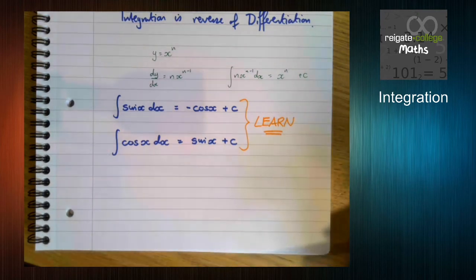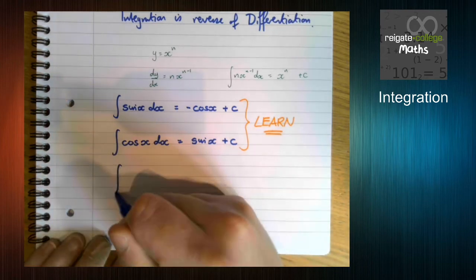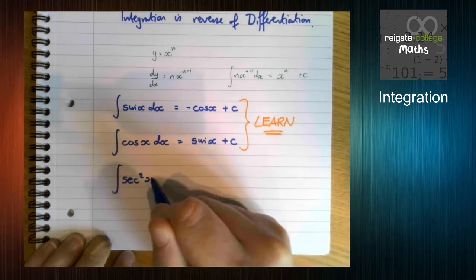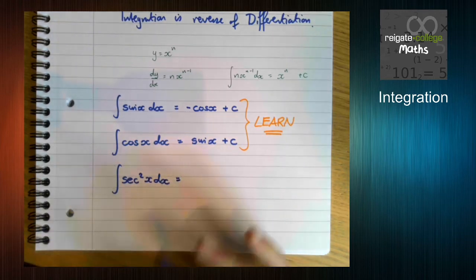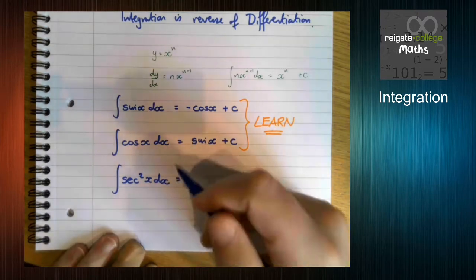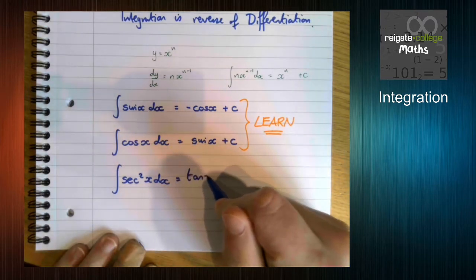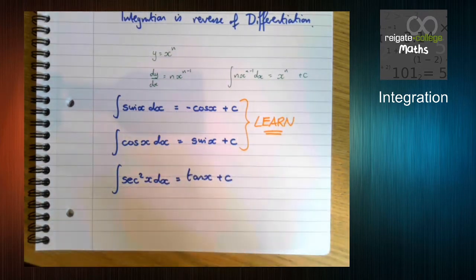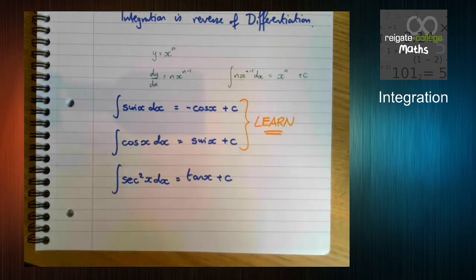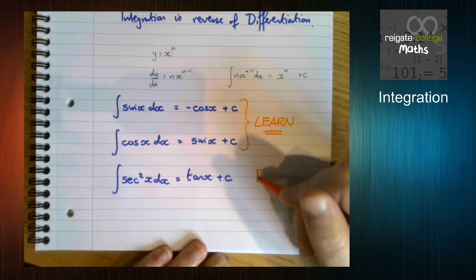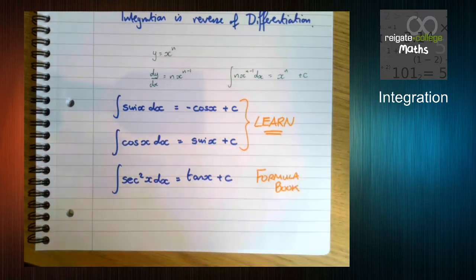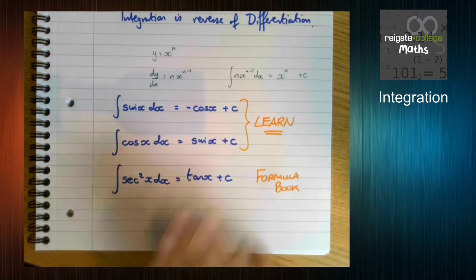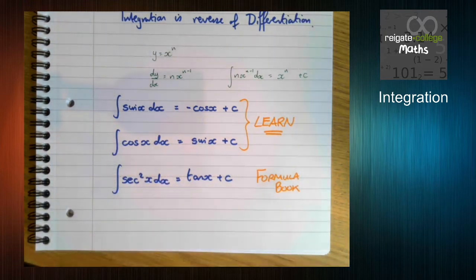The one that we're going to use in this video often that you don't need to learn, it's in the formula book, but the reason it's there is because sec squared x integrates to tan x. This is in the formula book, in a way. It's not directly like this. It's in a form that I'll get to in a moment.